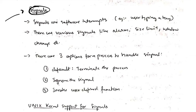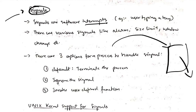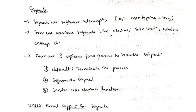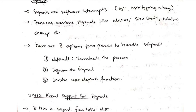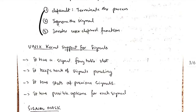The first topic is about signals. What is a signal? A signal is a software interrupt — when a process is performing some task, any interrupt that comes is known as a signal. Examples include alarm, size limit, and window change. There are three options for a process to handle a signal: the default option is to terminate the process, the second is to ignore the signal, and the third is to invoke user-defined functions. I will be discussing each of these in the upcoming topics in some detail.